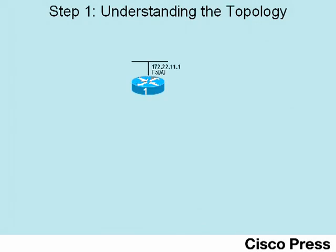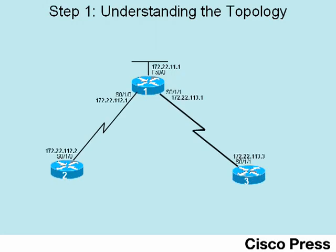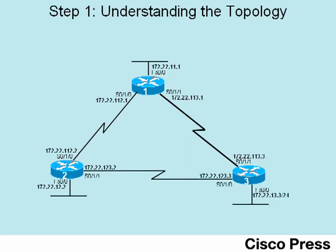Router 1 has a LAN interface with IP address 172.22.11.1 as well as two WAN interfaces connected to routers R2 and R3. Additionally, R2 and R3 each have a LAN interface configured with an IP address, and routers 2 and 3 have a serial link between each other. This lab starts with all IP addresses configured, all interfaces up, and router 3's RIP already configured. Router 1 and router 2 do not have any RIP configuration to start.